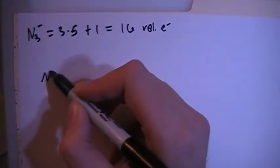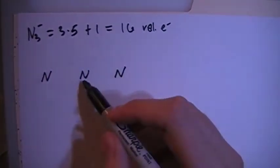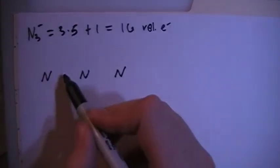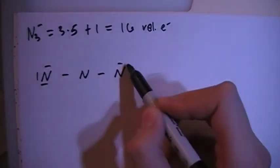So obviously with 3 nitrogens you're just going to have 3 nitrogens in a row, okay, one of them being a central atom. So we can go ahead and single bond these nitrogens and then fill out the peripheral nitrogens octets.